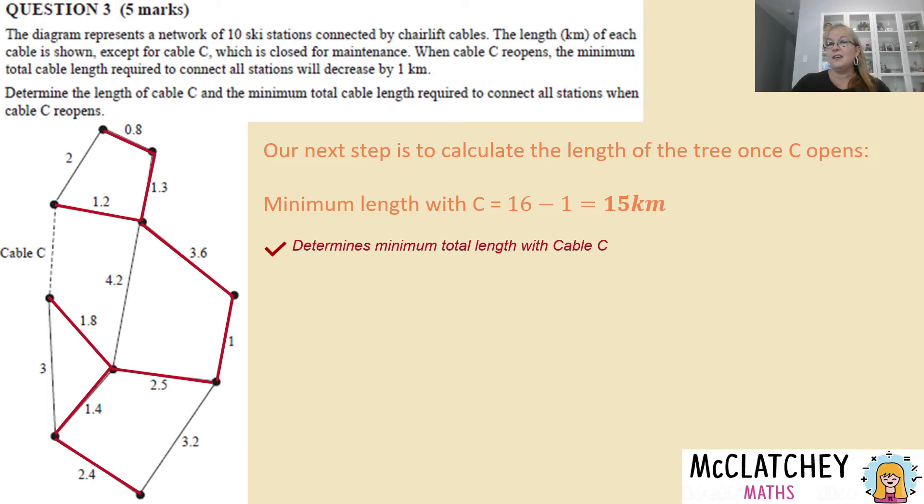Okay so I know that once I add C back in I'm going to get this new length of 15 kilometers. Now I don't need to redraw a spanning tree because I still can't do that without knowing what this one is. However what this basically means is that now that C is included one of these lines is going to disappear and be replaced by C. And whatever line that is Cable C is going to be a kilometer shorter than it because that will reduce the total by a kilometer.